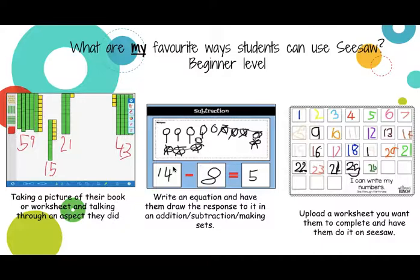Another really simple activity is for the juniors — upload a worksheet and have them complete it. In this one, they were in a group writing numbers up to 31 and had to take turns, then at the end say the number, practicing their forwards counting. You could have them counting in threes, fives, tens — whatever you're working on.